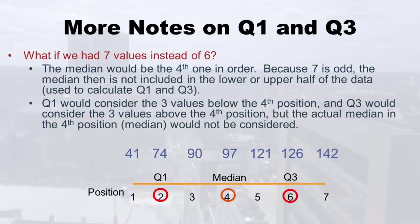What if we had seven values instead of six? I've expanded and pretended we had seven hospitals. This is similar to the 11-value example where the median was clearly one number — here it's 97. That 97 does not get reused in the bottom and the top. So Q1 is the middle number of the three bottom ones, and Q3 is the middle number of the top three. That's what happens with seven values, and also with 11 values like I demonstrated with those hospitals.